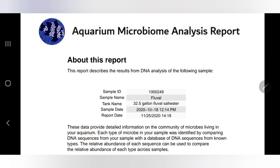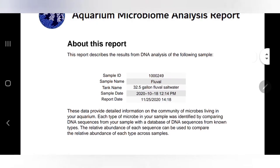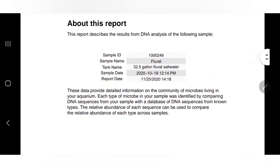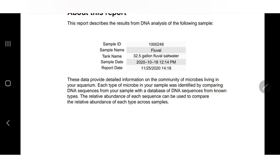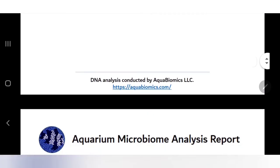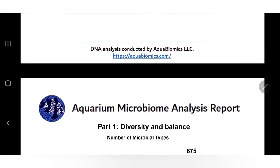The report date came back November 25th, 2020. Keep that in mind — the time frame from October 18th to November 25th, it's not a quick test. It takes a little bit. It says here the data provides detailed information on the community of microbes living in your aquarium. Each type of microbe was identified by comparing DNA sequences from your sample with a database of DNA sequences from known types.